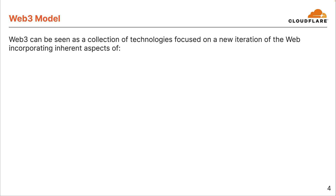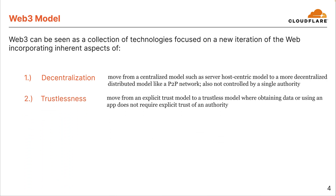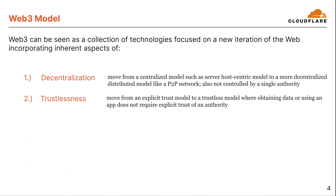So what is Web3? Web3 can be seen as a collection of technologies focused on a new iteration of the web incorporating inherent aspects of decentralization — moving from a centralized model, such as a server-host-centric model, to a more decentralized distributed model, like a P2P network, also not controlled by a single authority. Trustlessness — moving from an explicit trust model to a trustless model, where obtaining data or using an app does not require explicit trust of an authority.